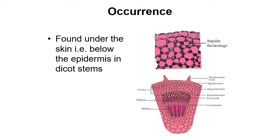As you can see in the diagram, colenchyma cells have angular thickenings — they deposit material at different angles. They are present below the epidermal cells. They are found under the skin, below the epidermis, in the dicot stem. In the dicot stem they are usually present in the lower regions termed the hypodermis — a layer lying between or below the epidermal region.